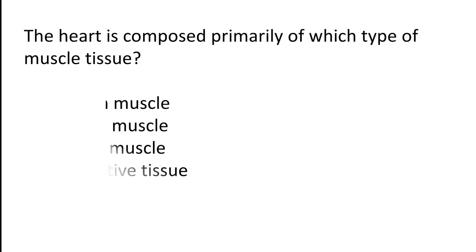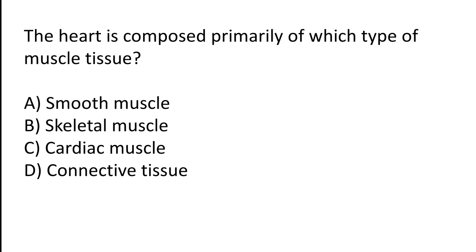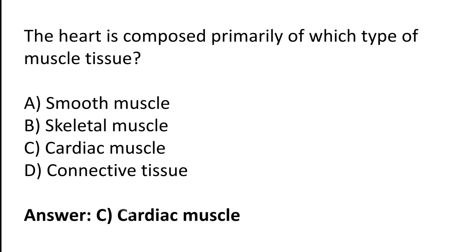The heart is composed primarily of which type of muscle tissue? A) Smooth muscle, B) Skeletal muscle, C) Cardiac muscle, D) Connective tissue. The correct answer is option C: cardiac muscle.